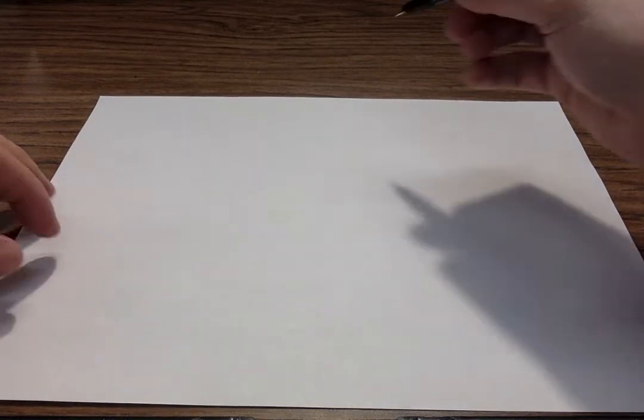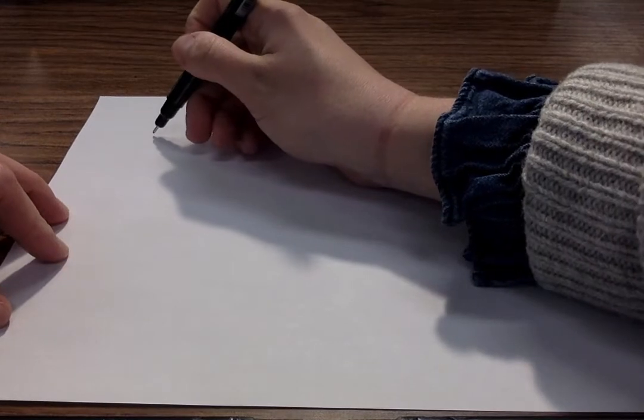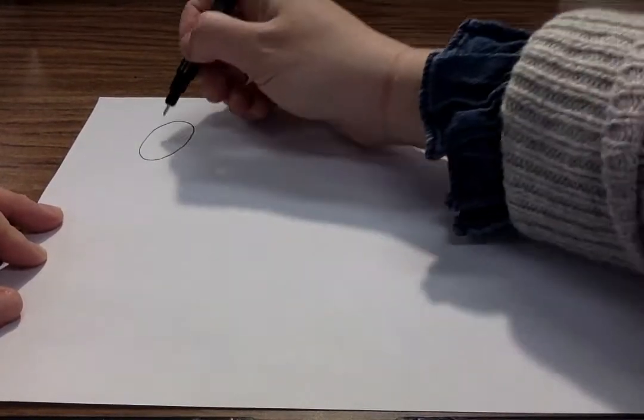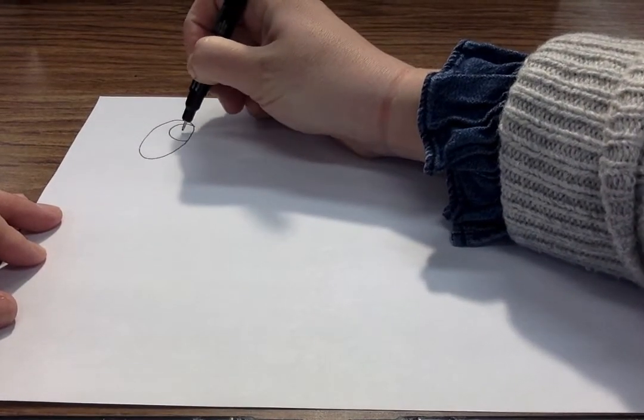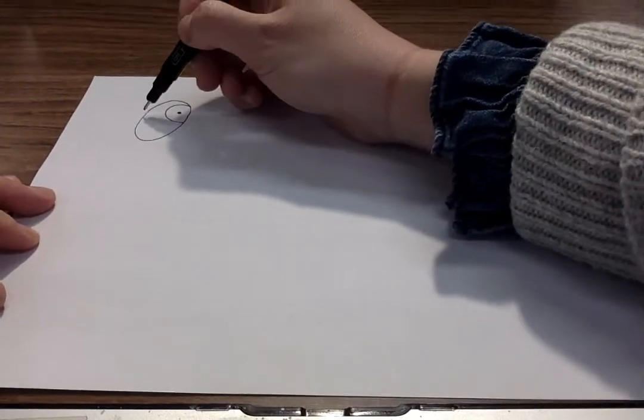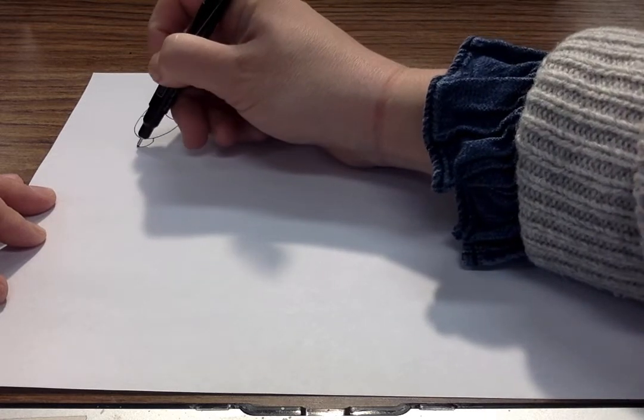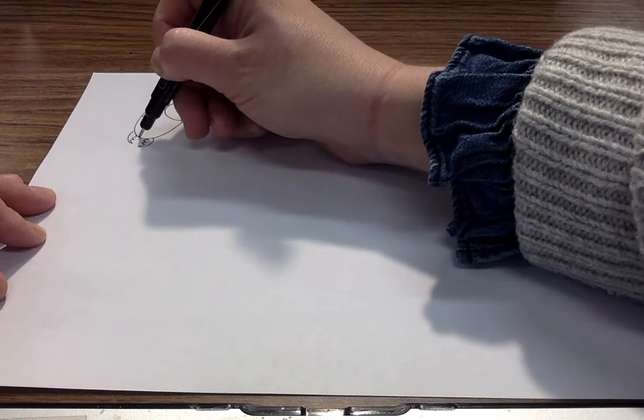First, we need to draw our praying mantis's head. Somewhere on the upper left side of my paper, I'm going to draw a U shape and connect it through the top. This is where we'll add a big eyeball with a little pupil. Because the other eye is on the opposite side, we're only really going to see this one. Add an antenna or two, some pincers, and maybe a little tongue in the middle. It's got a lot of personality just from adding the eyeball.